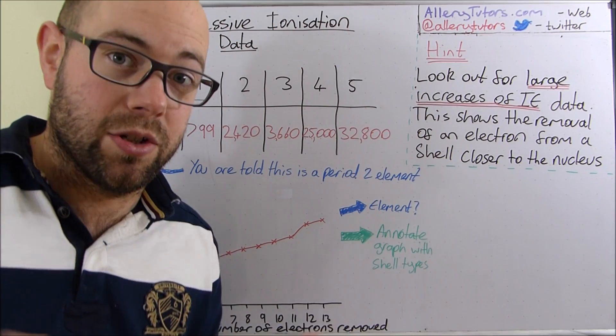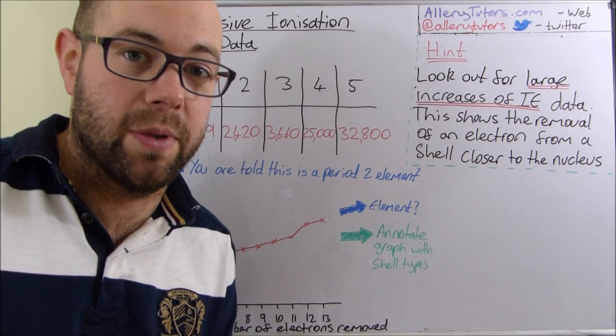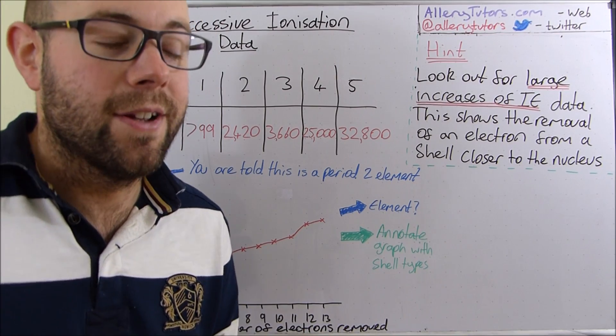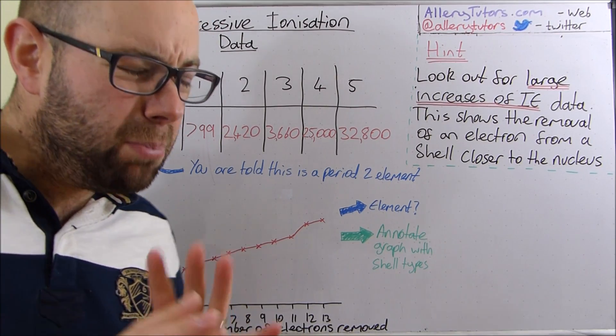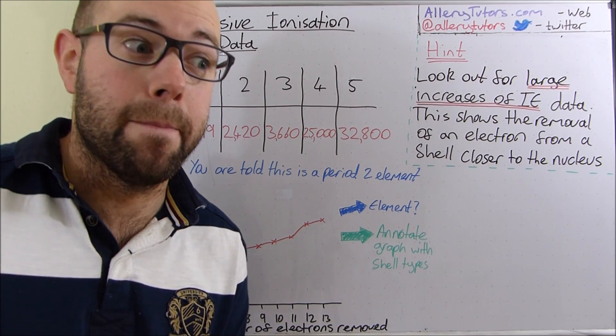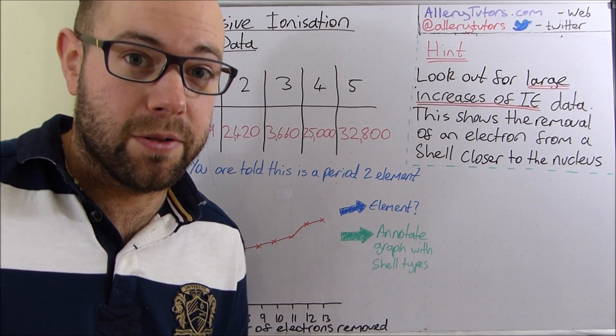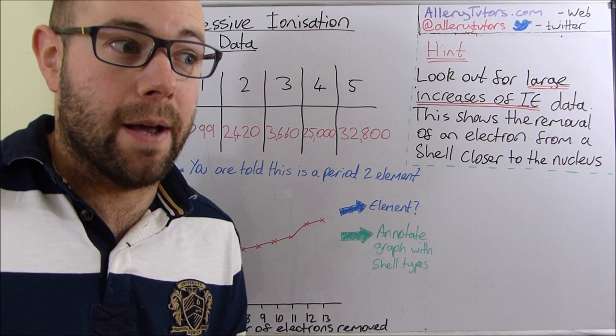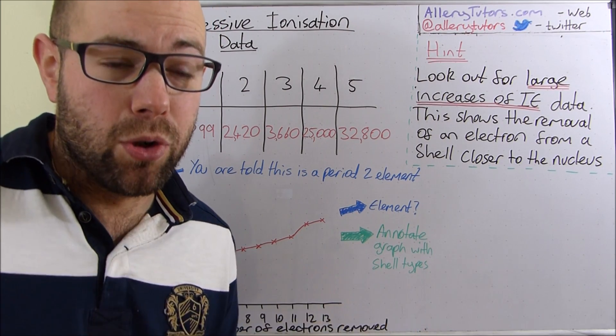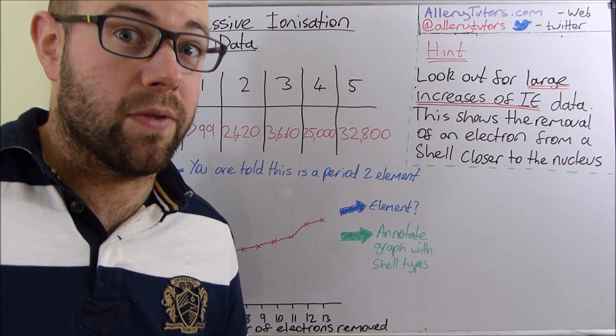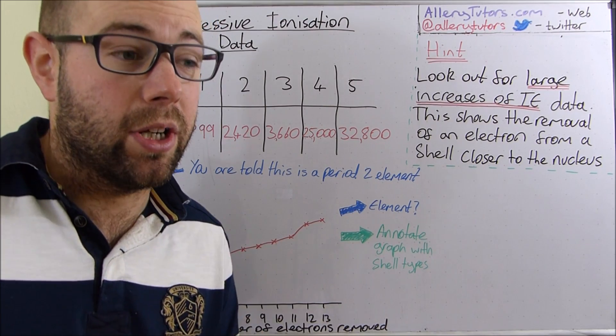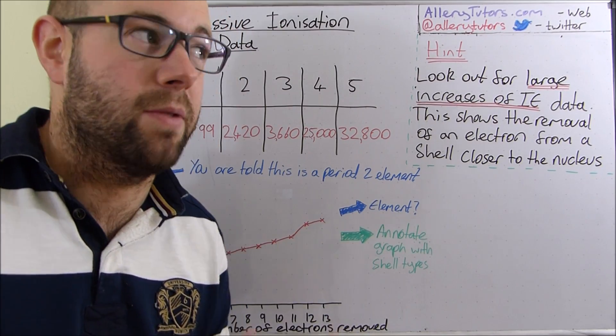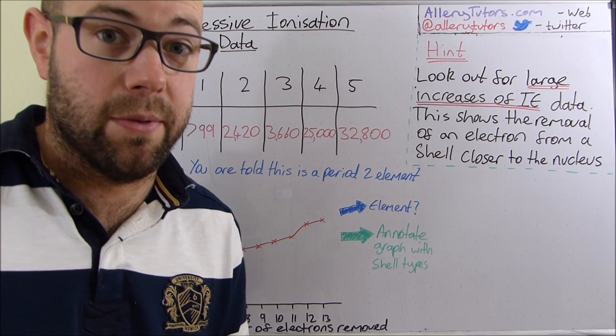But we can also call this shielding and the more electron shells you've got between the nucleus and the outer electron shell the more shielding you have and the more shielding you have the less energy is required to remove that electron. So we're going to be talking a lot about shielding and atomic radius and you've got to get these words in when you're describing or explaining what's happening here.